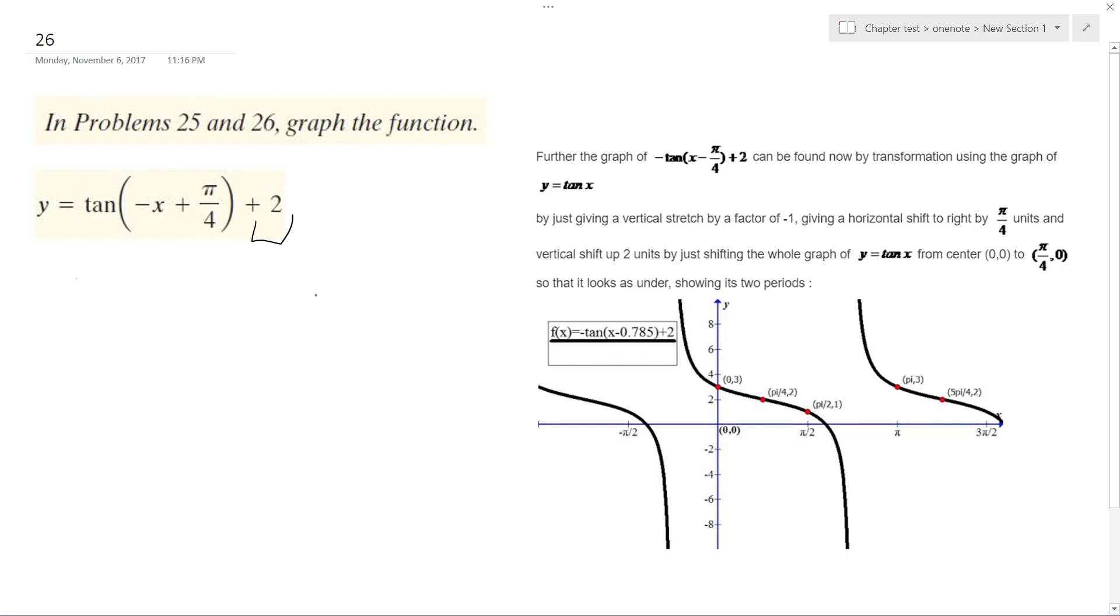So this is a normal tangent graph, but let me do it like this. We can do tangent of negative quantity x minus pi over 4 plus 2.